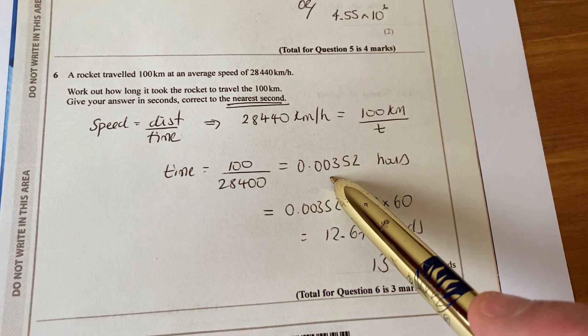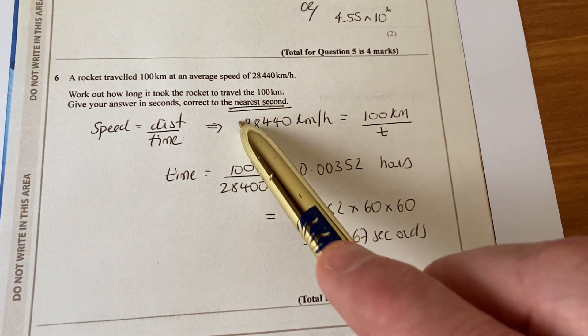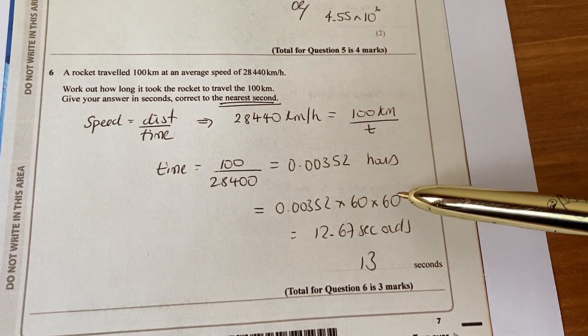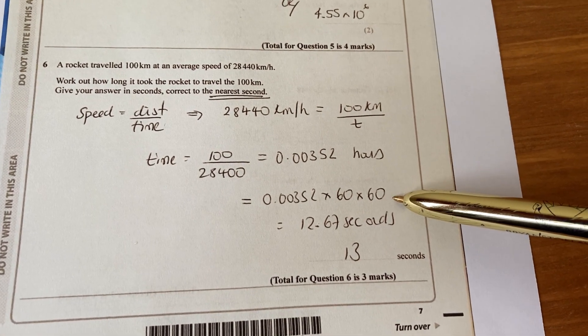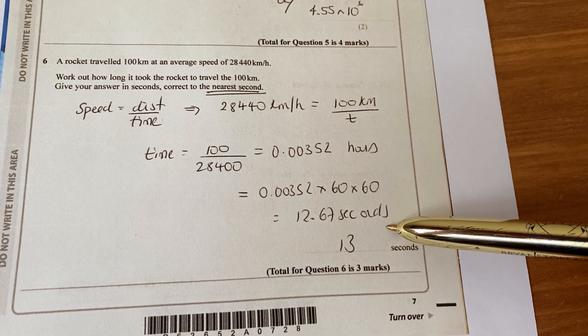0.00352 hours. We want it in seconds, so multiply that by 60 to convert it into minutes, 60 again to convert it into seconds, and we end up with 12.67 seconds.